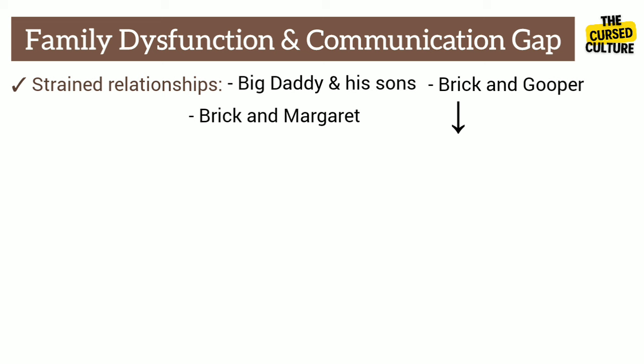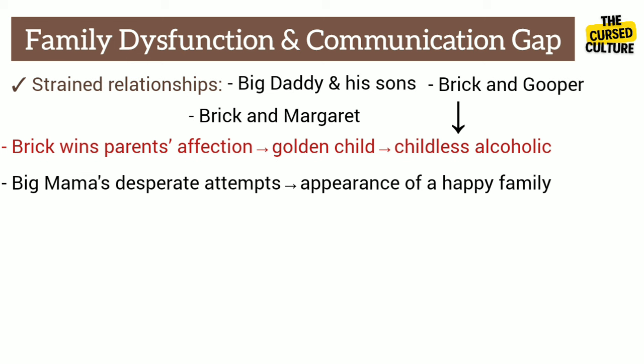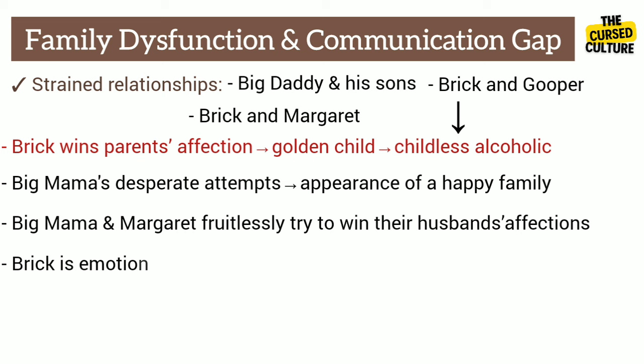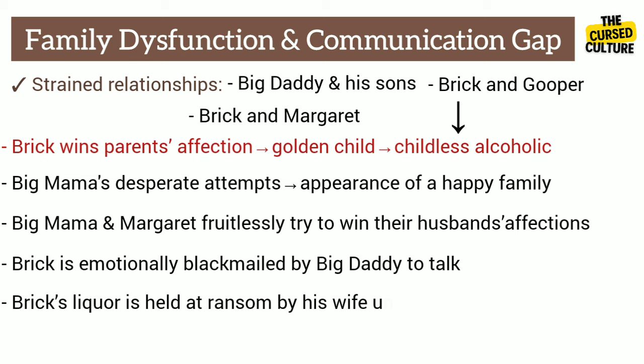The sibling rivalry between Gooper and Brick appears to be one-sided, as Brick does not engage in it yet wins the parents' affection by being the golden child despite being a childless alcoholic. Big Mama's desperate attempts to maintain the appearance of a happy family, despite underlying problems, show the pressure to meet societal norms. The wives fruitlessly try to win the affections of their husbands. Brick is emotionally blackmailed by Big Daddy, who grabs his crutch to force him to communicate. Brick's liquor is held at ransom by his wife until he conceives a child with her. Margaret also faces blackmail — she must produce an heir to gain financial stability.